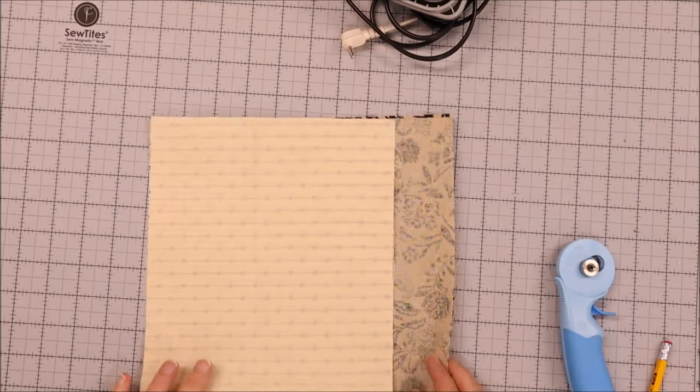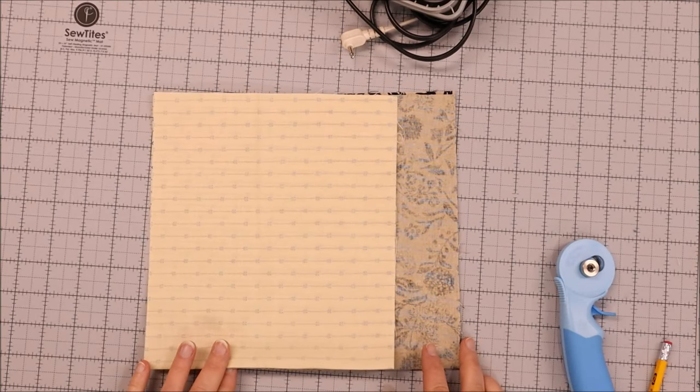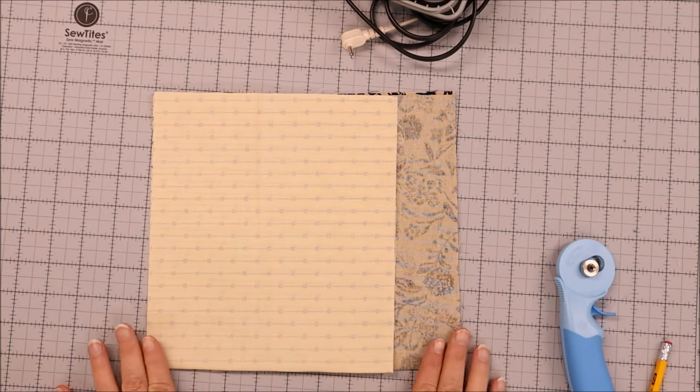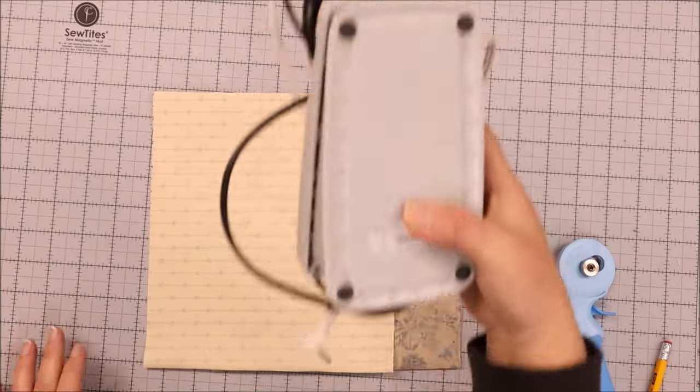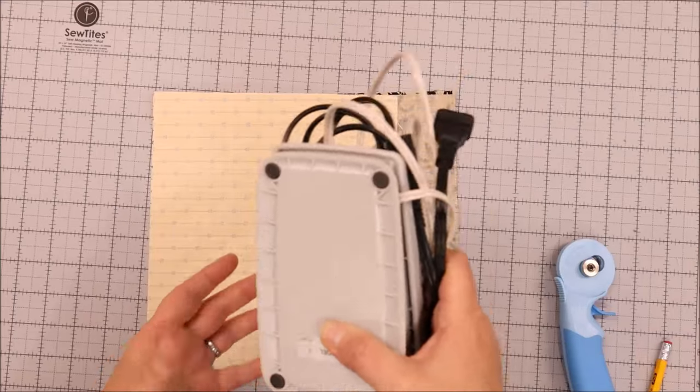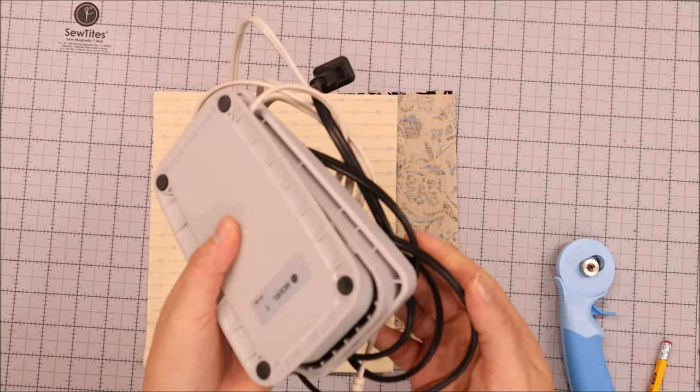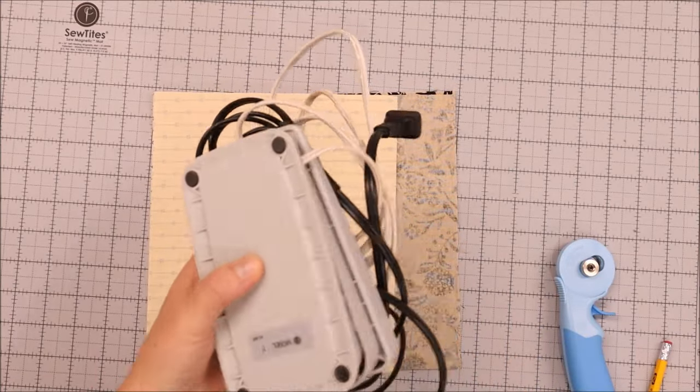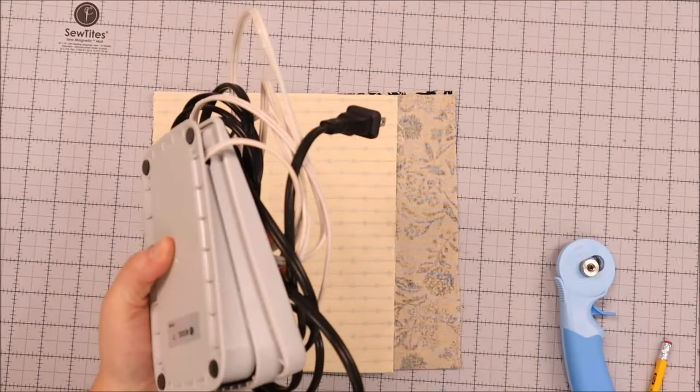We are going to make a bag for our sewing machine pedal. So if you travel with the machine, you might find yourself with a pile of cords and your pedal, and it just doesn't stay. And when you open your bag, you've got all these cords.